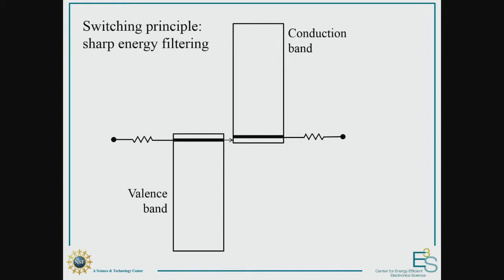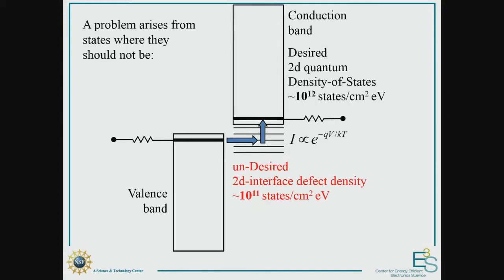But as we all know, there's a host of problems that make this not really realistic. And the one we want to focus on is that there's a whole bunch of states where they should not be inside the band gap. And what can happen is that carriers can tunnel from the valence band to these trapped states inside the band gap and then be thermally excited to the conduction band. And this thermal excitation follows the thermal slope of the ordinary transistor, which is